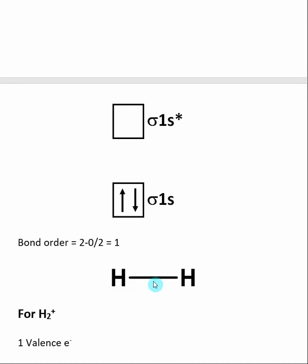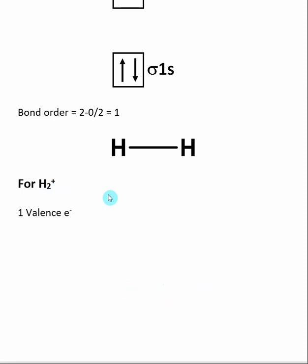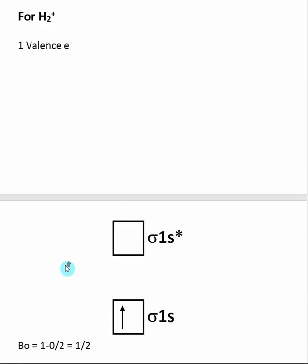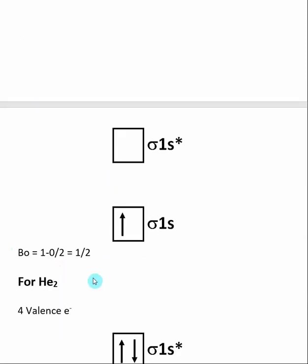We can also consider some theoretical molecules, such as H2+, and determine whether this molecule can exist. Each hydrogen normally brings one valence electron, but to gain a positive charge, one electron has been removed, so H2+ has only one valence electron. When we find the bond order, there is one electron in bonding molecular orbitals and zero in antibonding molecular orbitals. Dividing by two, this theoretical molecule H2+ has a bond order of one half.